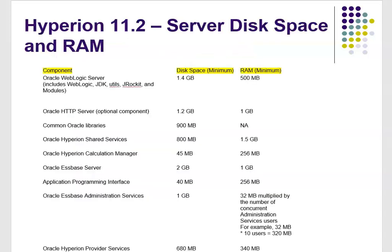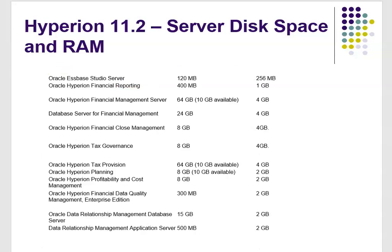The next slide shows a table for each component of the product indicating how much disk space and RAM is required. Oracle WebLogic Server requires 500 MB of RAM, HTTP Server requires 1 GB, the SOA server requires 1 GB, Financial Management (HFM) requires 4 GB, Financial Close Management requires 4 GB, Hyperion Planning requires 2 GB, and FDM requires 2 GB as well. You need at least 16 GB of RAM for a successful installation, but 32 GB is recommended if you want to run all products in a single environment.